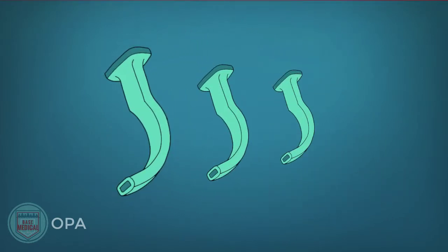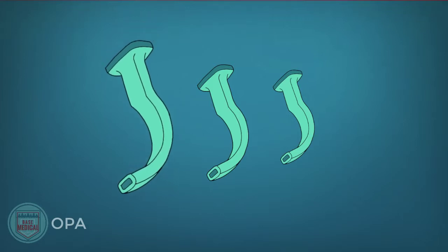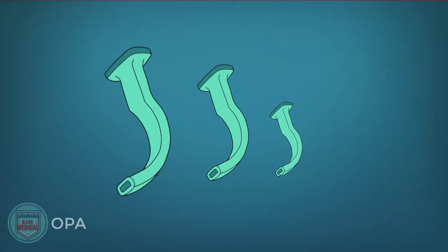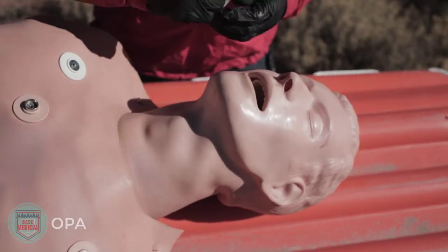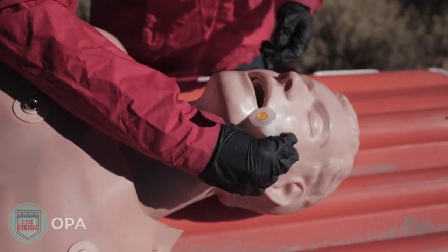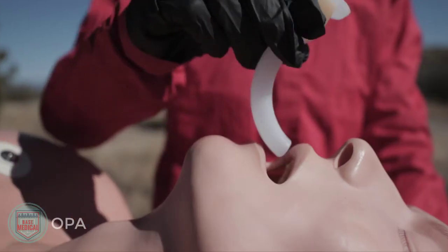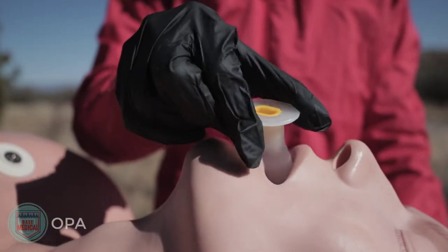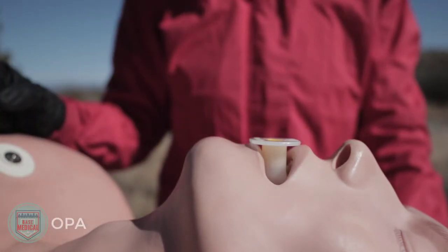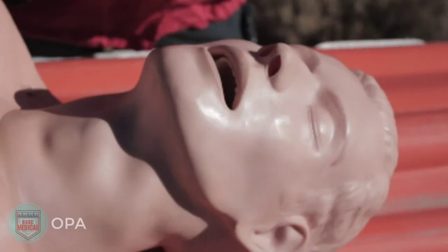The right sized OPA is very important. Too big can push the tongue back, blocking the airway. Too small can be a choking hazard and thus block the airway. Measure from the patient's earlobe, or angle of the jaw, to the corner of the mouth. Insert the OPA with the tip facing towards the roof of the mouth — be careful not to cause damage. Rotate 180 degrees so that the curvature of the OPA aligns with the curvature of the airway. The flange should rest between the teeth. An OPA can also be inserted at a 90 degree angle from the corner of the mouth.